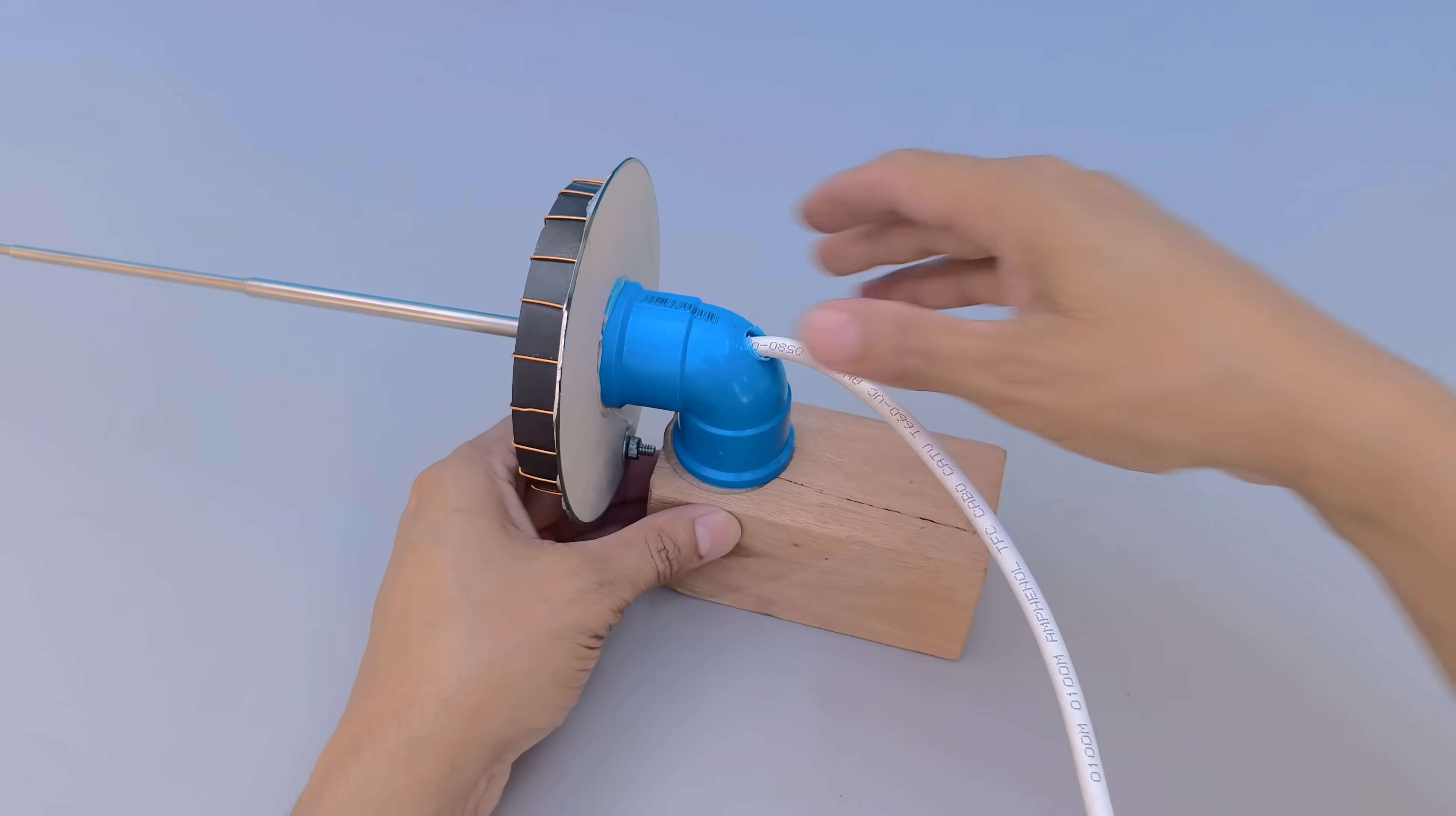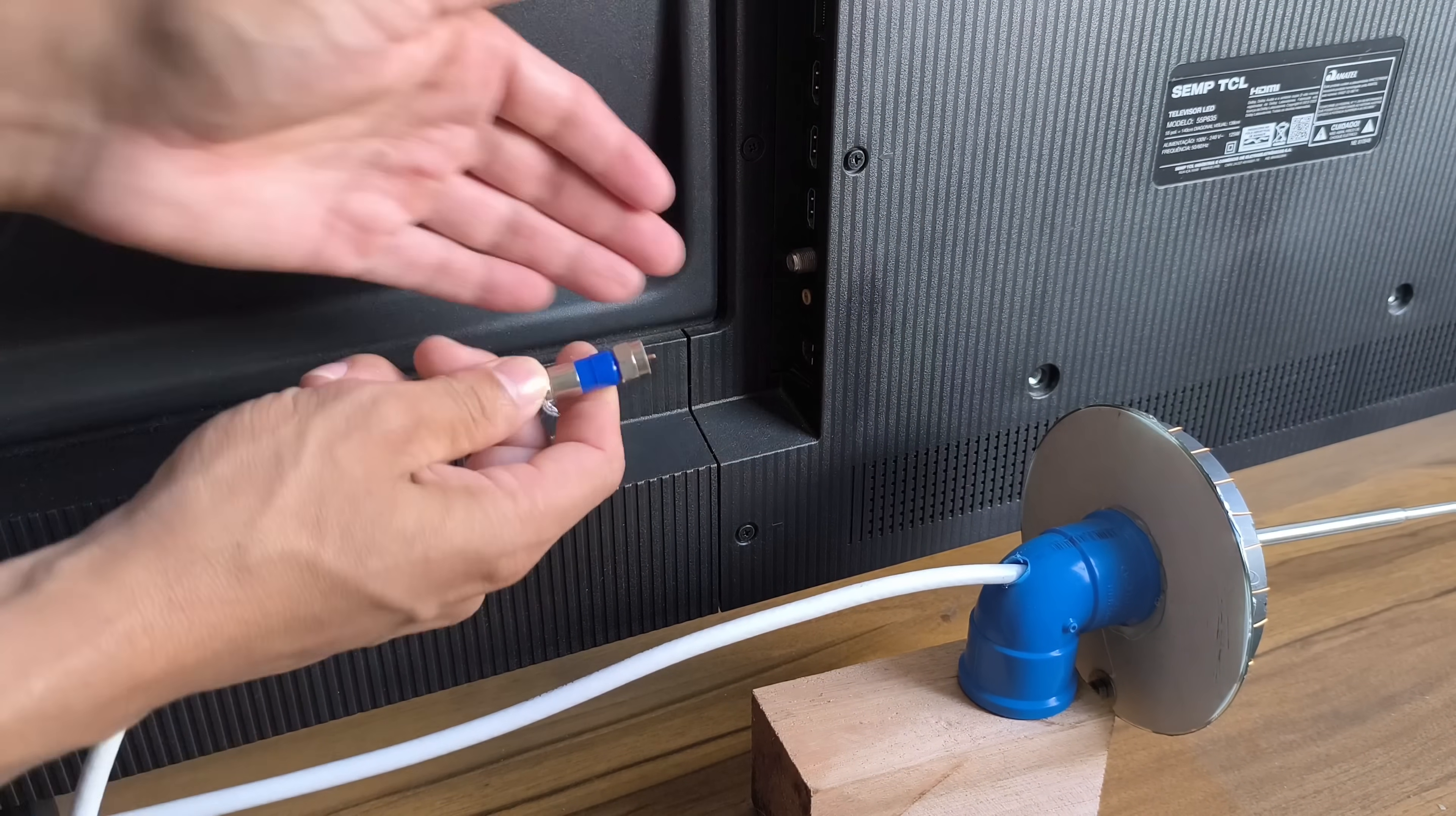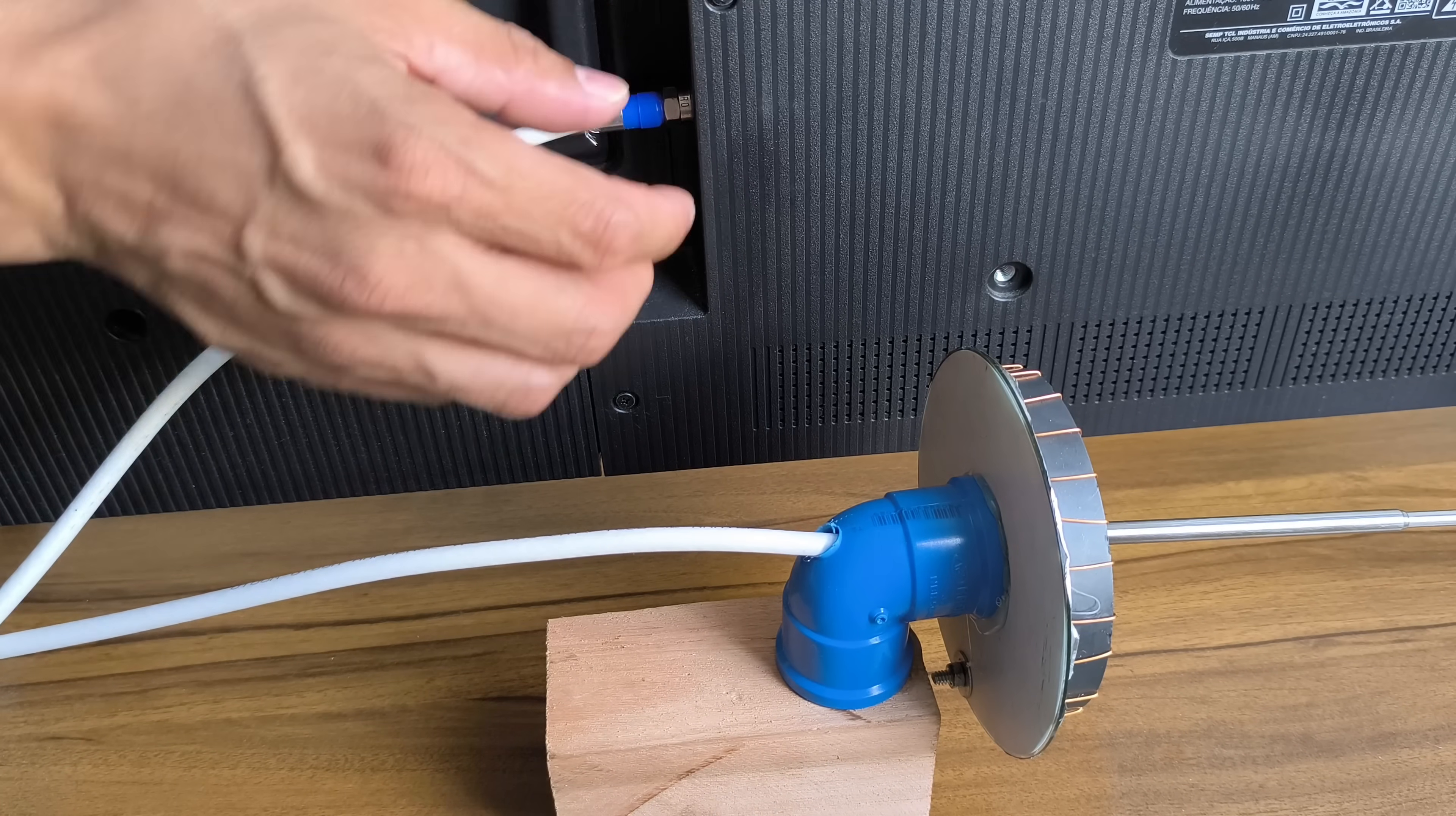The telescopic antenna can be adjusted to the desired height, as needed. With the entire device finished, the next step is simple. Connect the coaxial cable directly to the antenna input on your television. Then, access the TV menu and start the automatic search for channels available in your region.